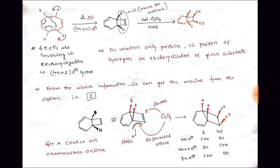If osmium tetroxide attacks from the above side of the molecule, that is the open (convex) side, so there are no significant repulsive effects from neighboring atoms. That is why osmium tetroxide prefers to attack from the above side of the molecule, and as a result, in the product the hydrogens and hydroxyl groups are on the same side.